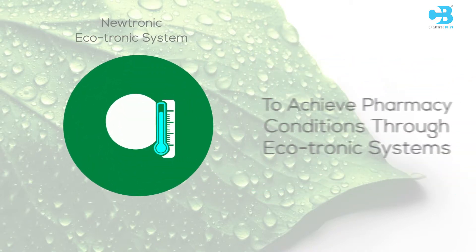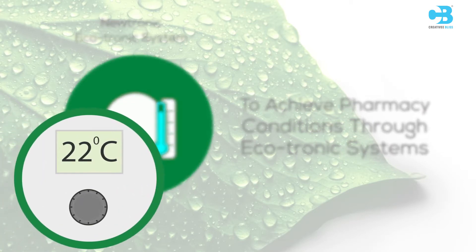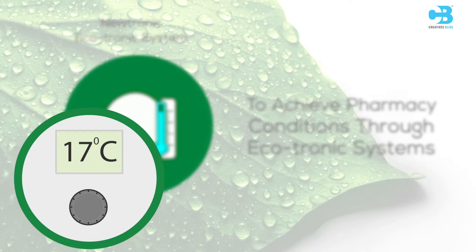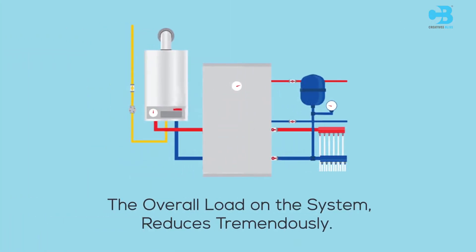On the other hand, in Ecotronic System, to achieve 25 degrees Celsius temperature and 60% RH, the compressor coil needs to be adjusted to 17 degrees Celsius, which is the dew point of the air as per the psychrometric chart. Since it requires less cooling, the overall load on the heating system reduces tremendously.